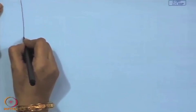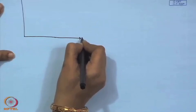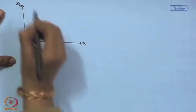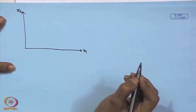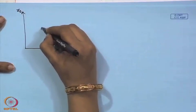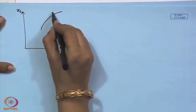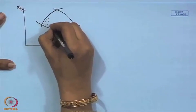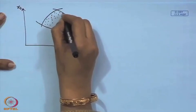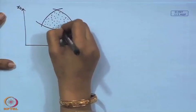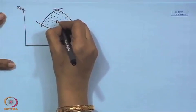Consider a problem of two variables x₁ and x₂. We consider a general constrained optimization problem with three constraints — constraint 1, constraint 2, and constraint 3 — which define the feasible space. All these constraints are non-linear in nature and together they form the feasible region.